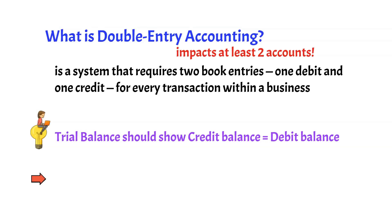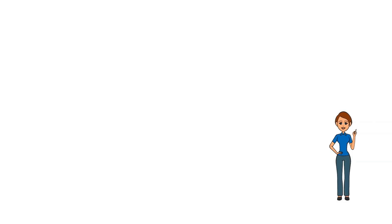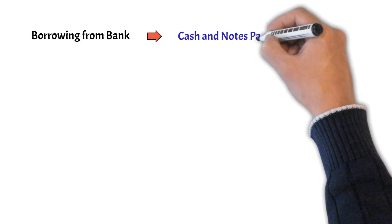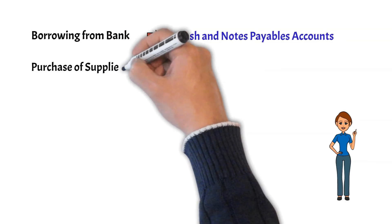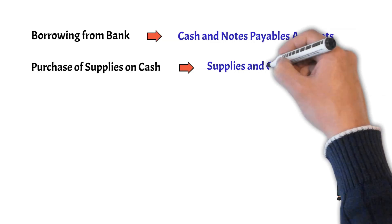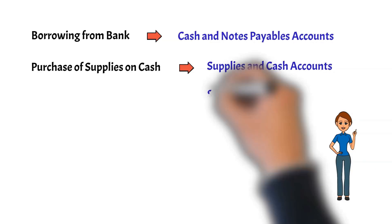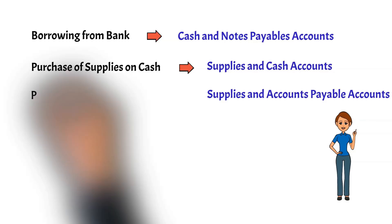The main rule for the double-entry system is to debit the receiver and credit the giver. For example, if a company borrows $10,000 from a bank, the transaction will impact both the cash and notes payable accounts. When the company repays the bank loan, both the cash and notes payable accounts are again involved. Likewise, when a company buys supplies for cash, both the supplies and cash accounts are affected. On the other hand, supplies and accounts payable are the accounts involved if the company purchases supplies on credit.